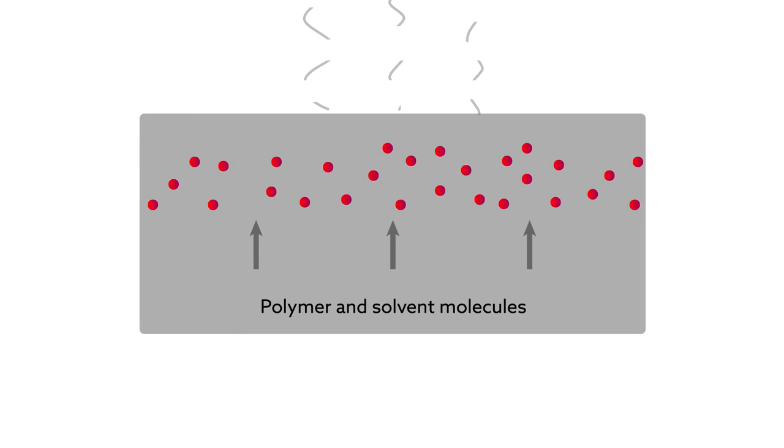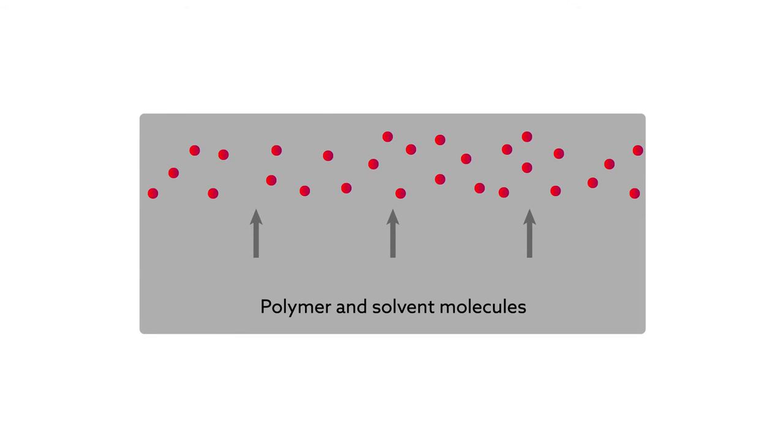As the solvent is dried out of the polymer, the strong binding between the solvent molecules and the chromophore molecules concentrates the chromophores near the surface of the polymer.